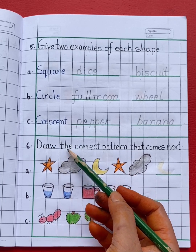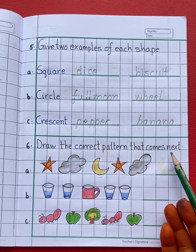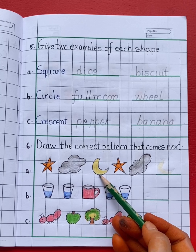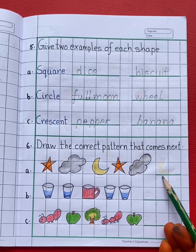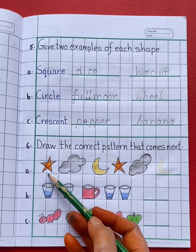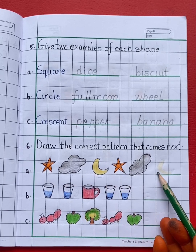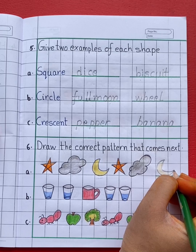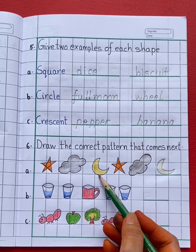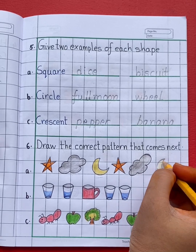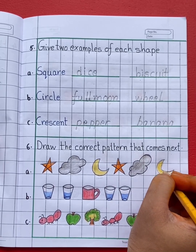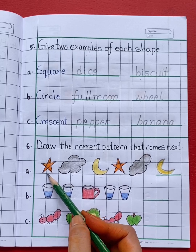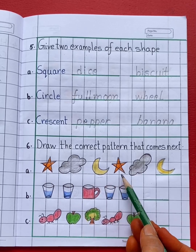Next question is: draw the correct pattern that comes next. See the first pattern — Star, Cloud, Moon. Star, Cloud. What comes next? See the pattern: Star, Cloud, Moon. Moon comes next. So draw here Moon. What is the color of the Moon? Yellow. Let's color the Moon with yellow color. Star, Cloud, Moon. Star, Cloud, Moon.